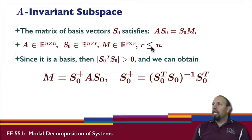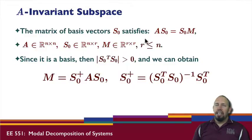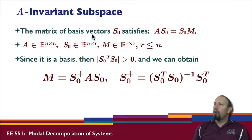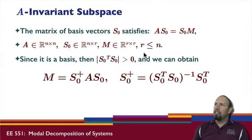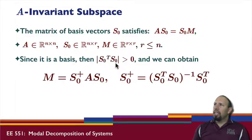Since S₀ is a set of basis vectors, it satisfies this. You can have other cases where R is greater than M, but then S₀ is no longer a set of basis vectors. For a set of basis vectors, this relationship must be satisfied. Since it is a set of basis vectors, the determinant of S₀ transpose S₀ is positive.